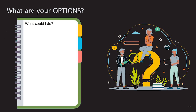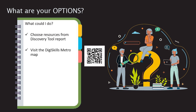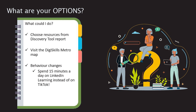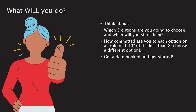Think about what you could do to improve your skills — list at least three possibilities. For example, choose one or more of the resources suggested in your Discovery tool report, visit the DigiSkills Metro map for more course options, or think of one or more behaviours you could change to help improve your skills. Consider how long you would spend focusing on that skill. The final stage is where you decide what you will actually do.